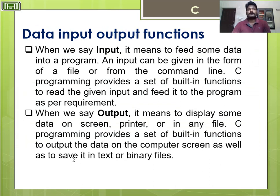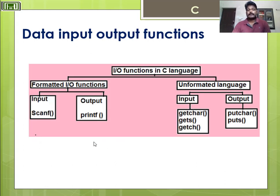Moving to data input/output functions in C. When we say input, it means to feed some data into a program. When we say output, it means to display some data on the screen, printer, or any other output format. C programming provides a set of built-in functions to read and write data. In C, data input functions can be categorized into formatted input functions and unformatted input functions.